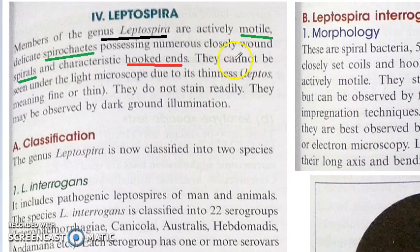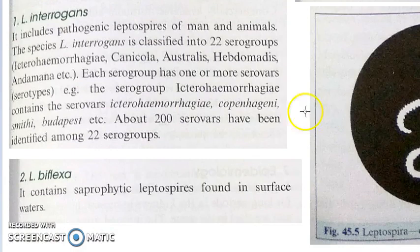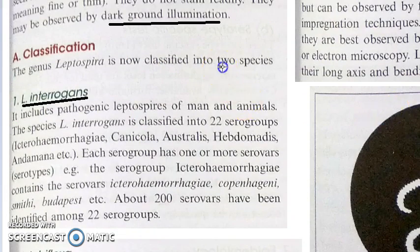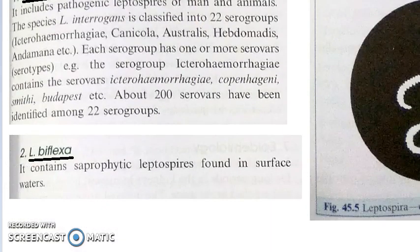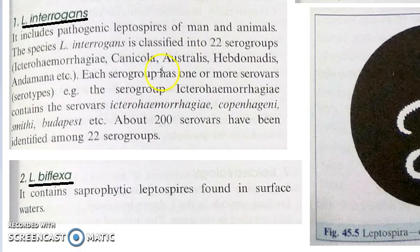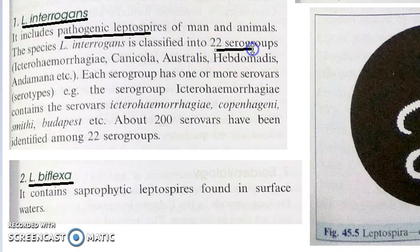Leptospira cannot be seen under a light microscope, so dark ground illumination is used — that's why a black background is shown. There are two species: Leptospira interrogans and Leptospira biflexa. We focus on Leptospira interrogans, which is pathogenic and causes leptospirosis. It has 22 serogroups, each with one or more serovars (serotypes).